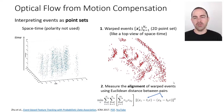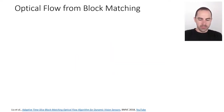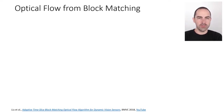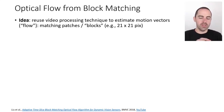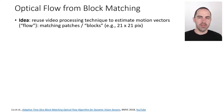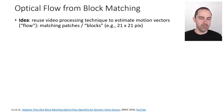Before moving to learning-based algorithms, let's review a model-based algorithm that estimates optical flow using block matching — a video processing technique. The idea is to reuse well-developed video processing techniques to estimate motion vectors. In video processing, motion vectors are estimated to predict intensities in blocks and transmit only the displacement coordinates rather than full pixel intensities, making it much more efficient for video compression.